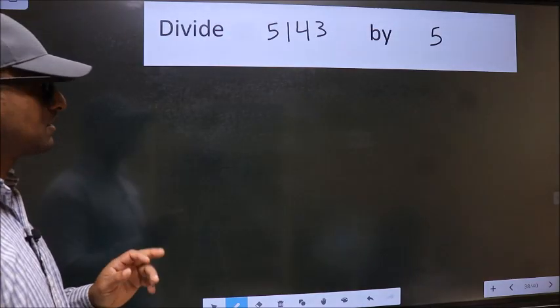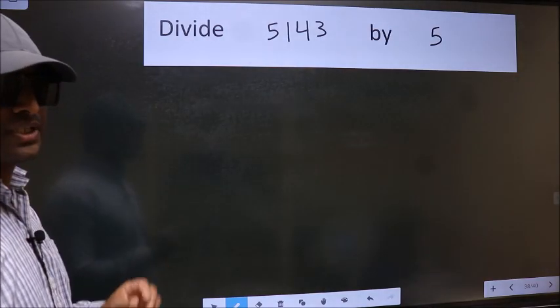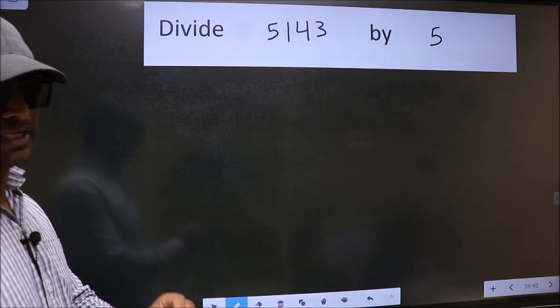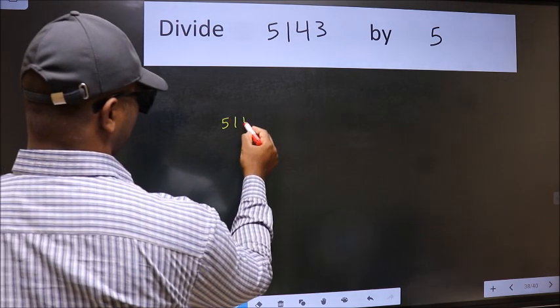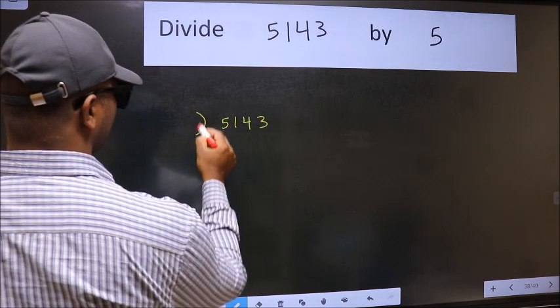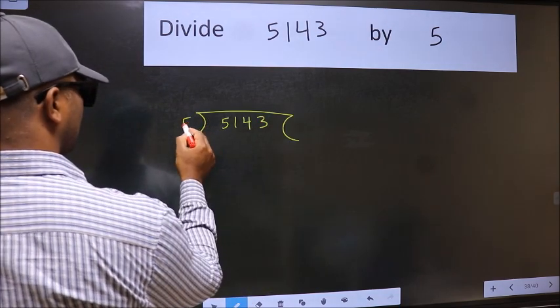Divide 5143 by 5. To do this division, we should frame it in this way: 5143 and 5 here.